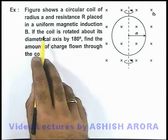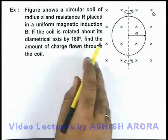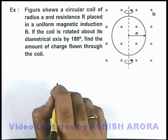If the coil is rotated about the diametrical axis by 180 degrees, we are required to find the amount of charge flown through the coil.